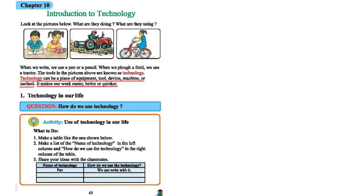Technology can be a piece of equipment, a tool, a device, a machine, or a method. This is the definition of technology. When we are asked what is technology, we write: technology can be a piece of equipment, a tool, a device, a machine, or a kind of method. It makes our work easier, better, or quicker. We use technology because it makes our life easier, better, and quicker.